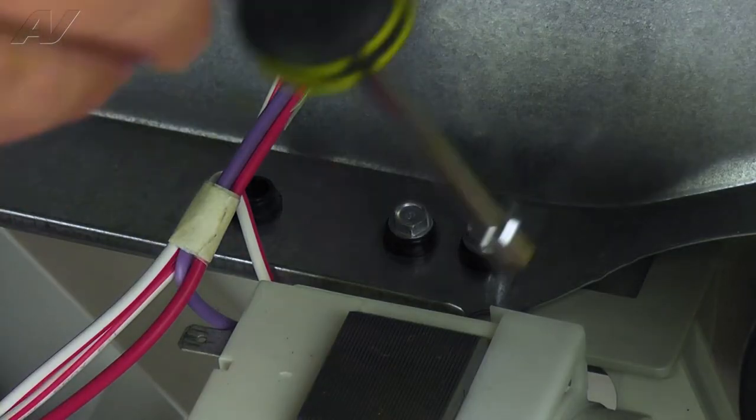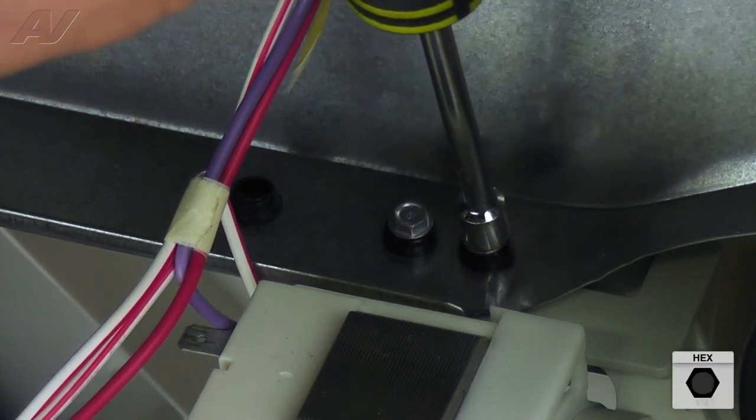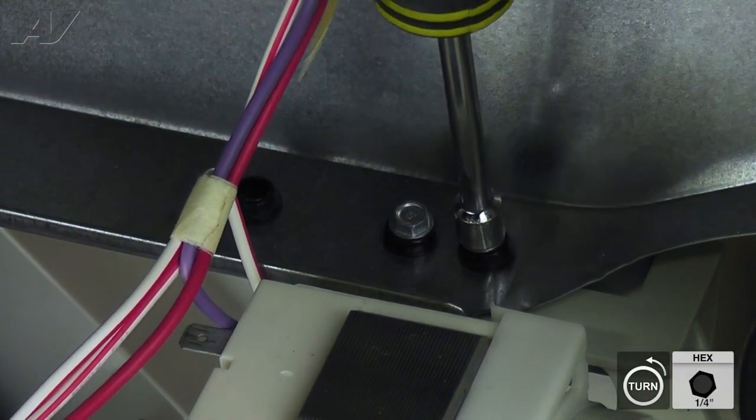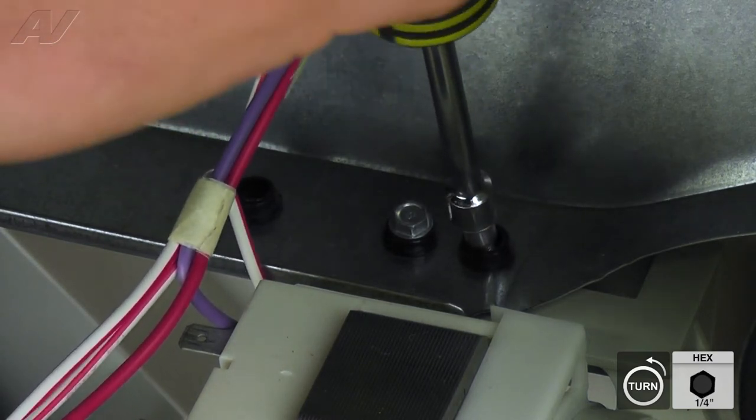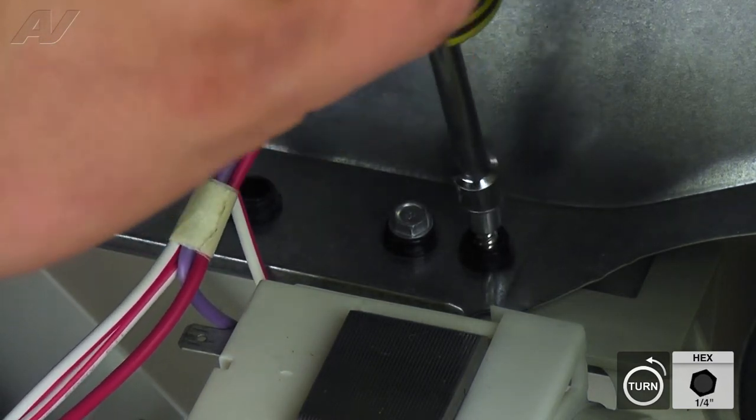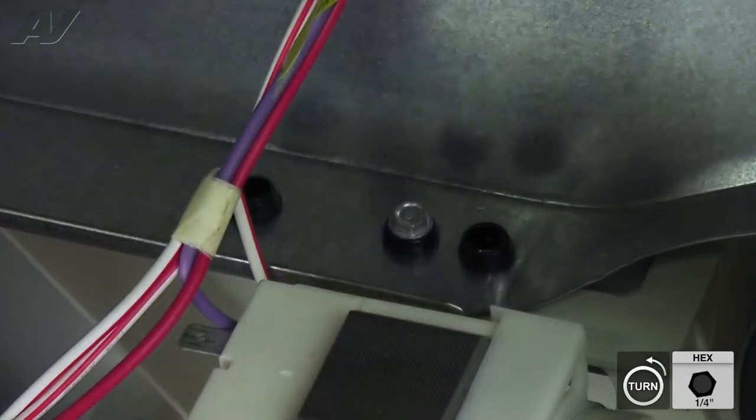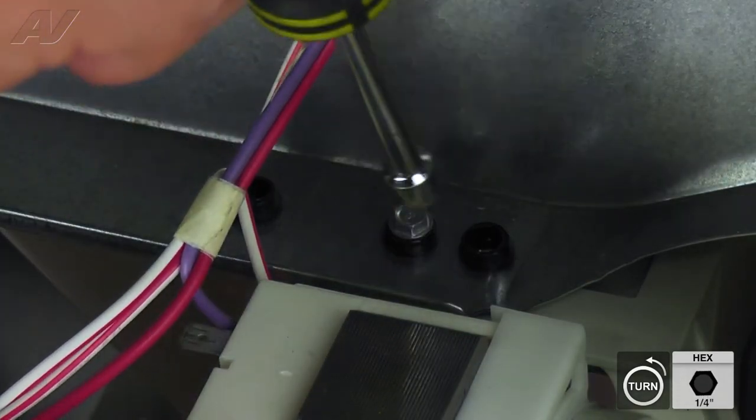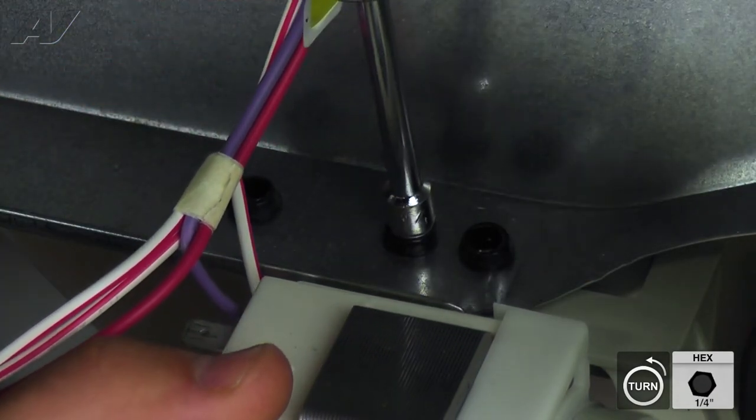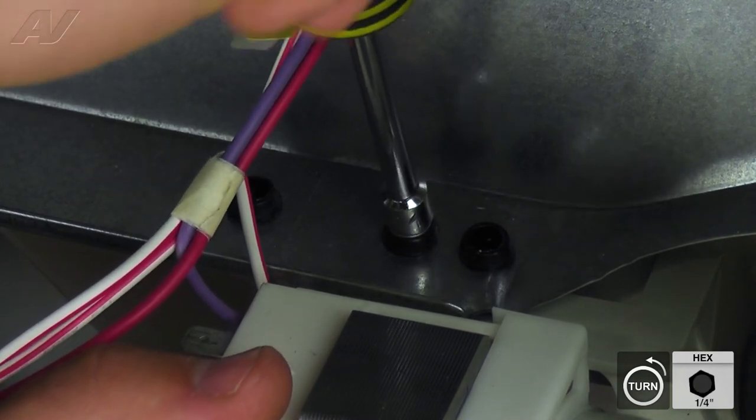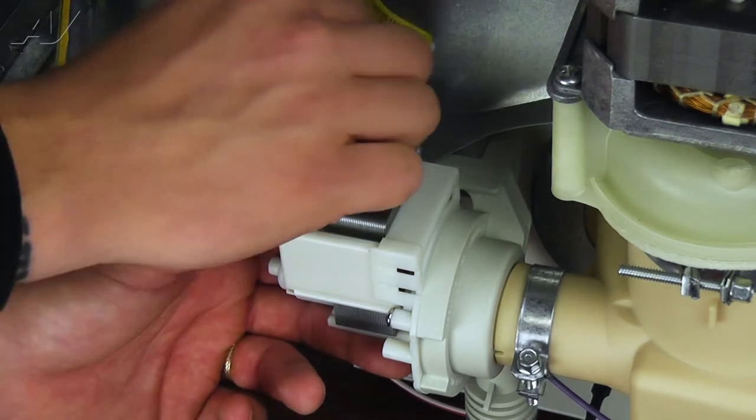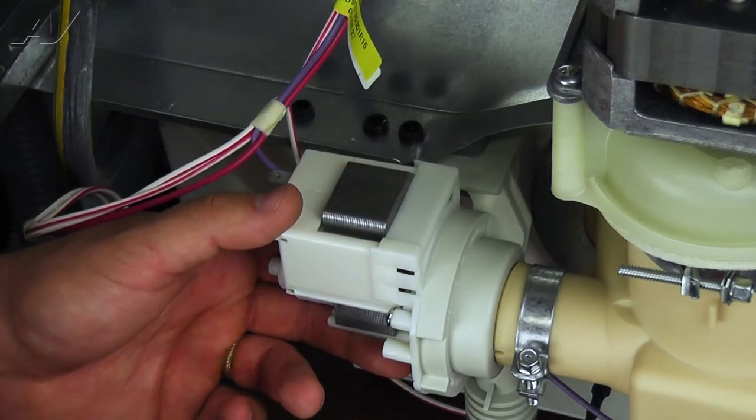Next, remove the two 1/4 inch screws mounting the pump to the dishwasher frame. With the screws removed,